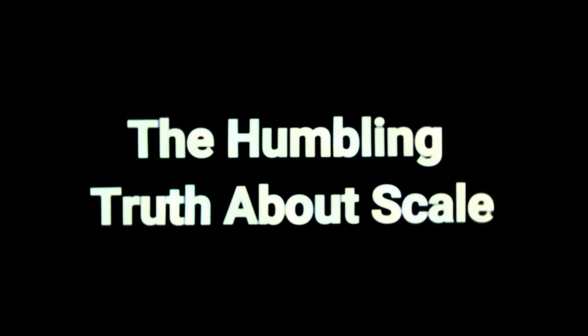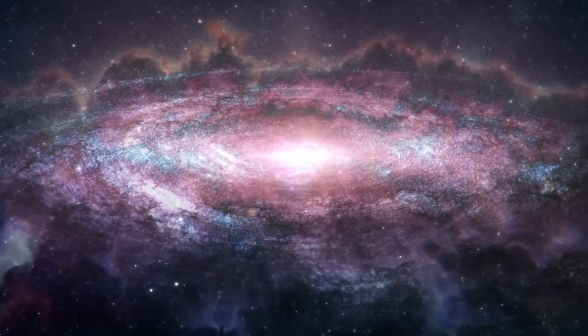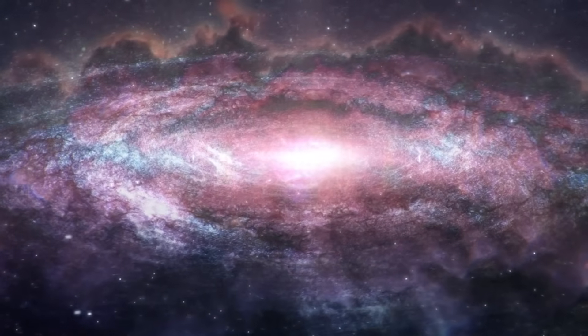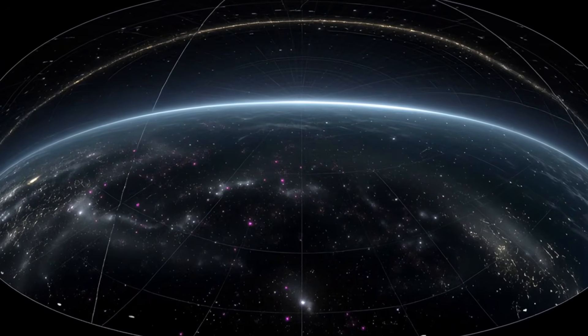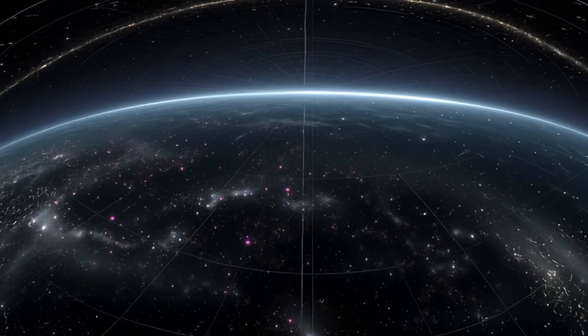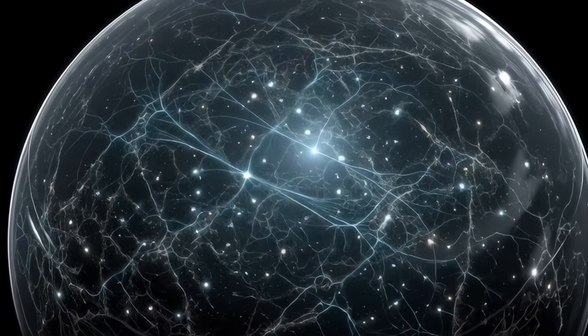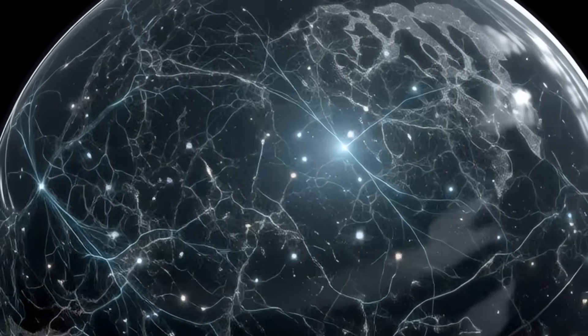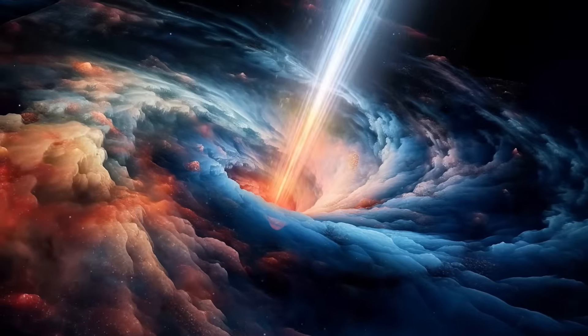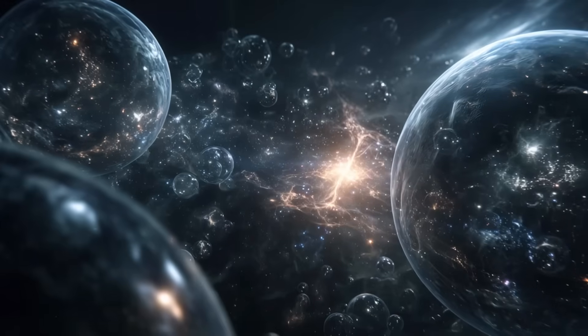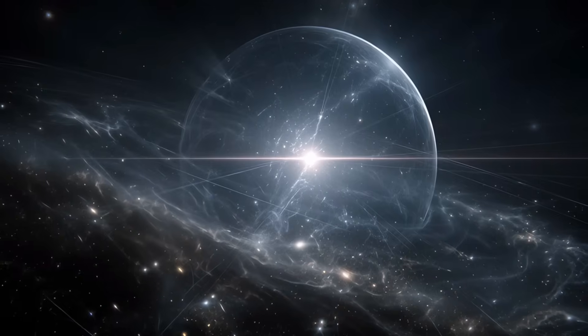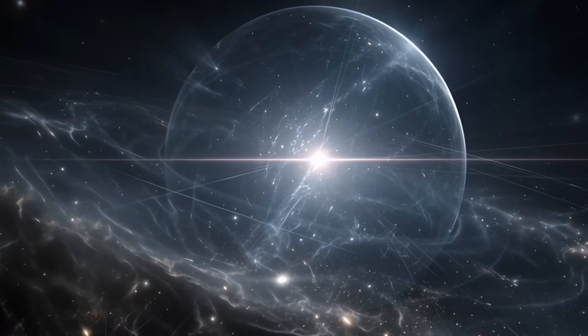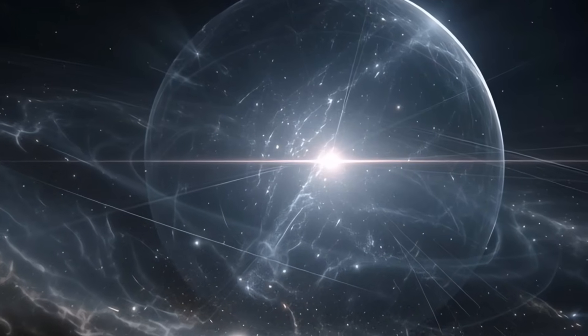The humbling truth about scale. Here's something that really puts it all in perspective. The observable universe is about 93 billion light years in diameter. The Hercules-Corona Borealis Great Wall takes up about 10 to 16% of that. But the observable universe is just the part we can see, limited by the speed of light and the age of the universe. The actual universe? It's probably vastly larger, possibly infinite. Every structure I've talked about in this video is contained within our observable bubble of the cosmos. Beyond that bubble, there could be structures even larger that we'll never be able to see because their light hasn't reached us yet.